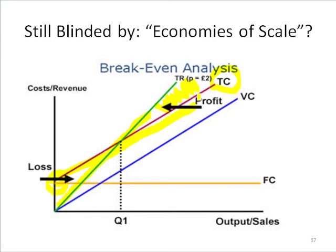You notice that the profit gets greater and greater as the sales go higher and higher. Now, this chart assumes that sales grow to the sky — there's an infinite pail to fill. It assumes that the margin percent stays the same and nobody's going to compete and cut the prices. It assumes that the variable cost stays the same. In other words, if I drive my truck further and further and deliver a smaller and smaller order to a smaller and smaller customer who pays me slower and slower — that doesn't show up on this curve.